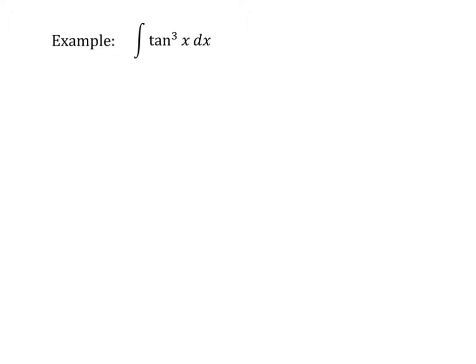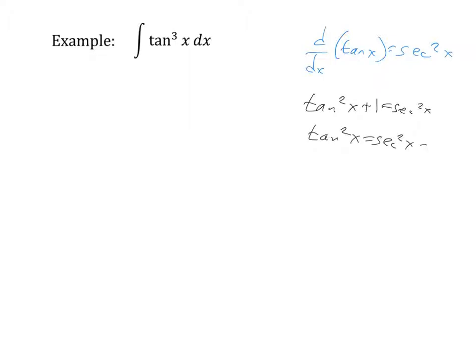In this example you're being asked to take the antiderivative of tangent cubed x. One of the first things that pops into mind is that the derivative of tangent x is secant squared x. So if this problem had a secant squared in it, we could probably do some kind of u substitution, but it doesn't have one. But from the previous slide we developed the identity that tangent squared x plus one equals secant squared x, which means tangent squared x equals secant squared x minus one. This allows us to change a tangent squared into a secant squared x minus one — which is nice, because we were wishing we had a secant squared around.